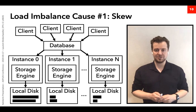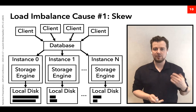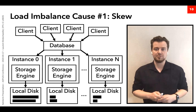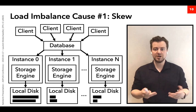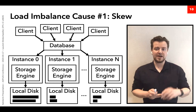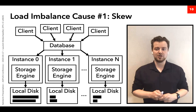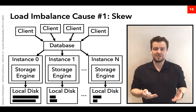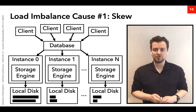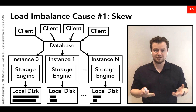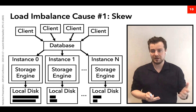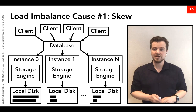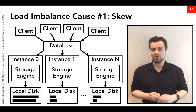There are two main causes of load imbalance in distributed databases. The first is the presence of skew across instances. Skew can occur because a key is more popular than others, or because the sharding function assigns more data to one instance. This causes capacity problems and uneven accesses — that instance does a lot more work, causing more IO and CPU usage, and can become a bottleneck for the entire database.